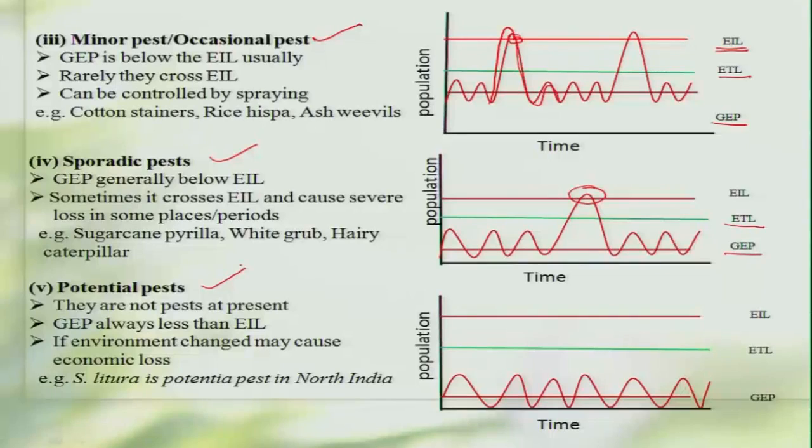We also have the potential pest, where the pest population is much lower than the economic threshold level. However, we do not know when they may become a major pest — they are quite capable of doing so and we should maintain constant watch over these pests. In this class, we learned about the different categories of pests based on different factors and understood their level of incidence and nature of damage. Thank you.